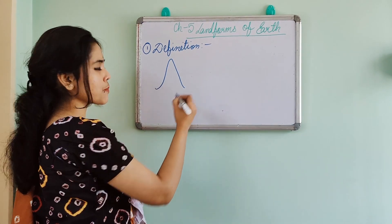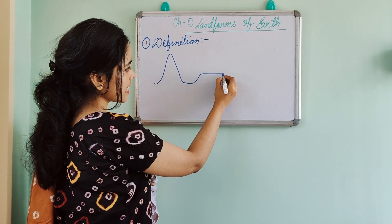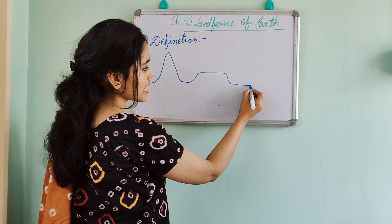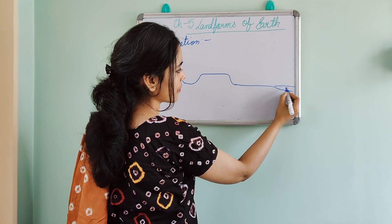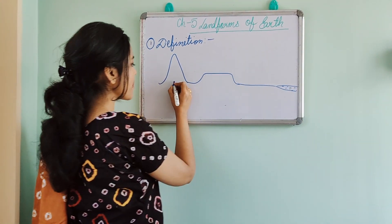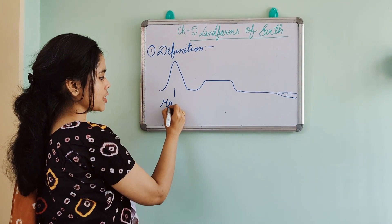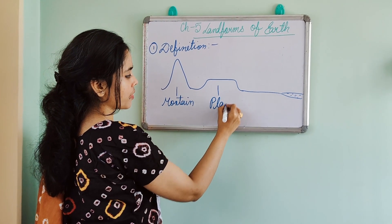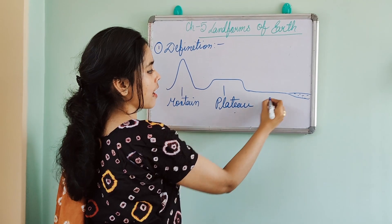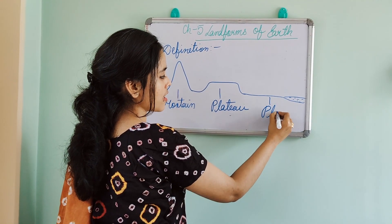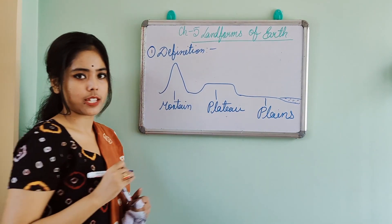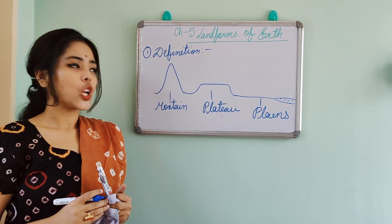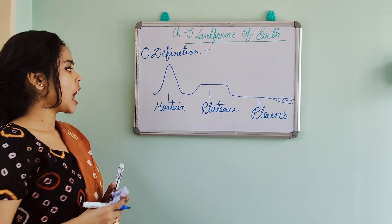The three major landforms are: first is mountain, second is tableland or plateau, and after that plains. So three major landforms — mountain, plateau, and plains — are generally located on the surface of the earth.